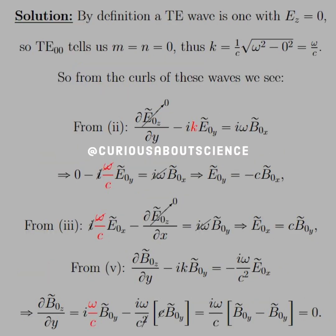Okay, so the solution is then, by definition, a TE wave is one where Ez equals 0, and that's transverse electric wave. So if it's transverse, the z component goes to 0. And so TE00 tells us that m and n are equal to 0. If that's the case, then the wave number k is equal to 1 over c square root omega squared minus 0. And the square root of omega squared goes to omega, so we're left with k equals ω/c. Again, that was given in the hint. No big deal.